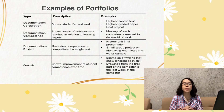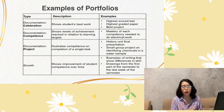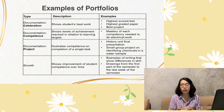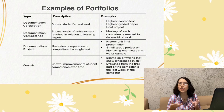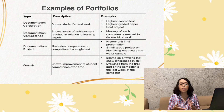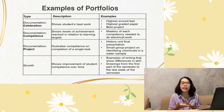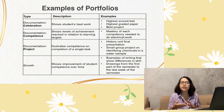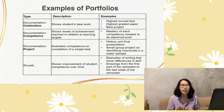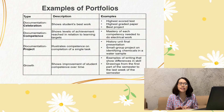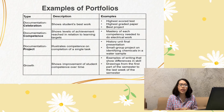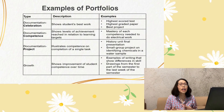The examples of portfolio are divided into documentation and growth. Documentation can be subdivided into three: first, documentation for celebration, which shows students' best work, such as highest scored test, highest rated paper, and best project. Second is documentation in competence, which shows the level of achievement reached in relation to learning targets, such as mastery of each competency needed to do electrical work. Third is documentation in project, which illustrates competence on completion of a single task, such as a history unit final presentation or a group project on identifying chemicals in a water sample.